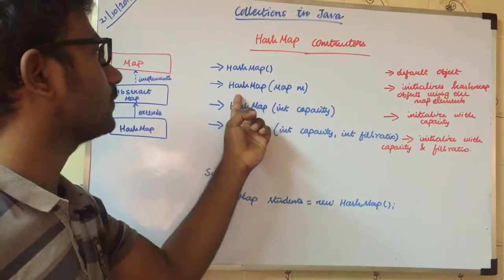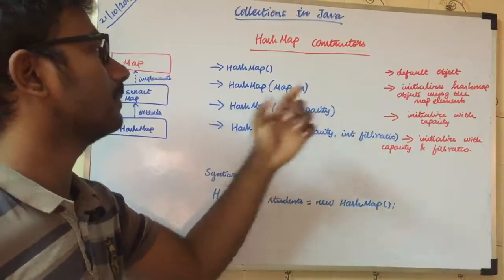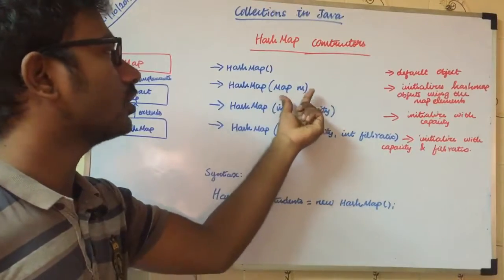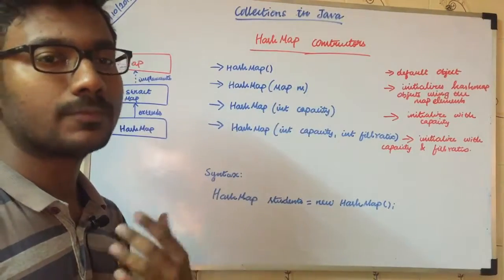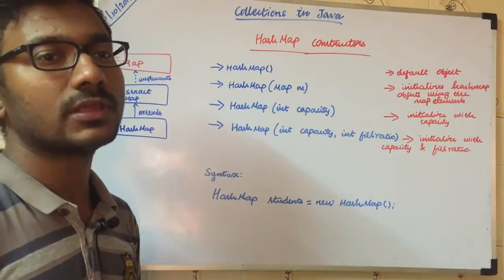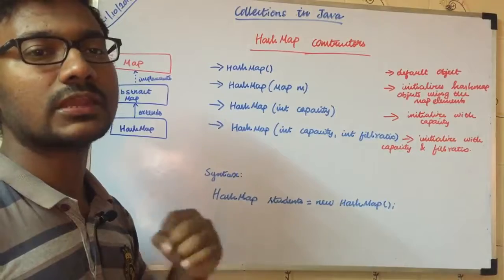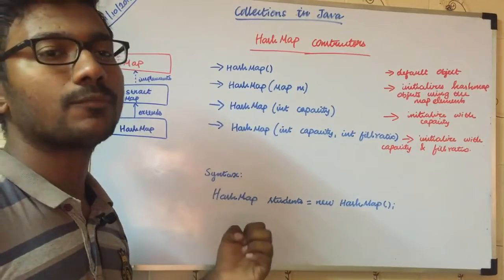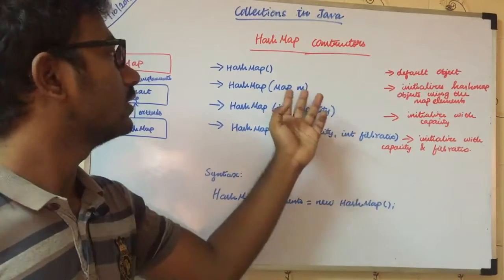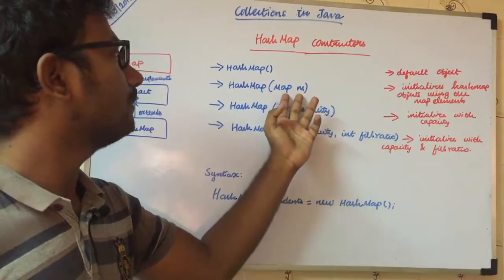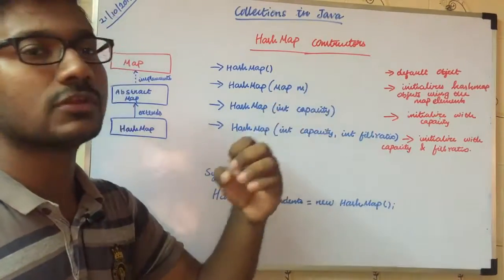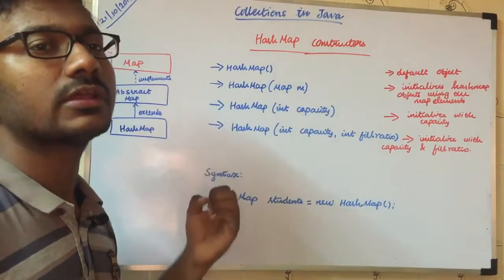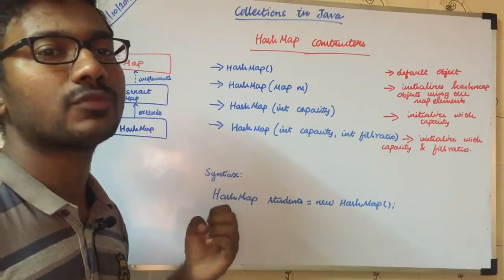Next, we call asMap(M), where we pass a map as an argument. If we pass it in, we use the same asMap object.